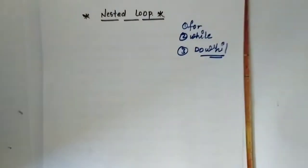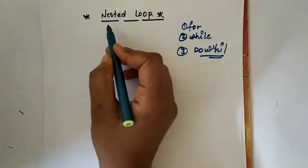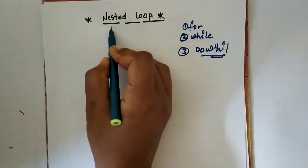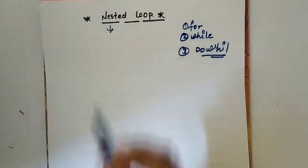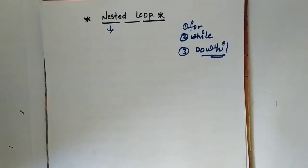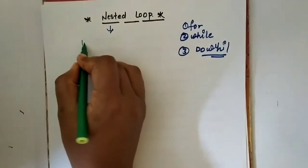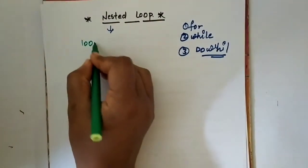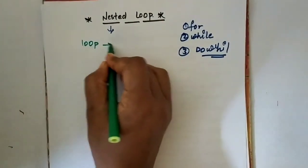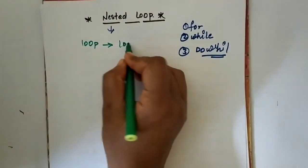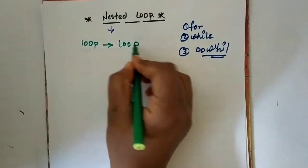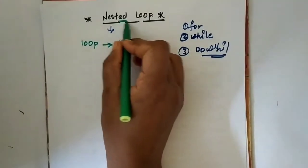So firstly we will discuss about what is nested. Nested means a loop contains another loop — a loop containing another loop is called a nested loop.